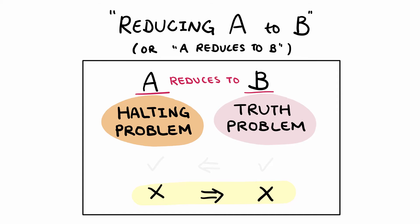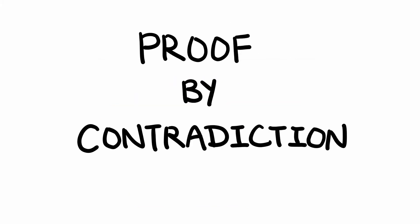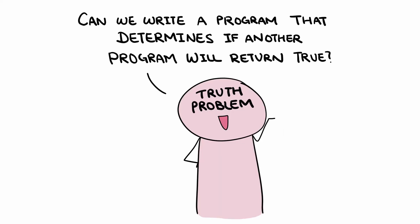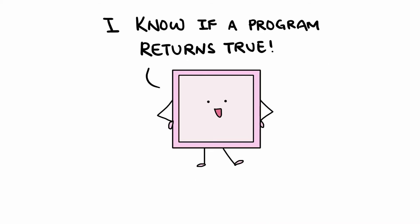To show that a problem is undecidable using reductions, we do it through a proof by contradiction. I've included the proof in writing in the description below as a reference, so feel free to look at that to follow along. The truth problem asks whether we can write a program that determines if another program will return true. Let us now assume for the sake of contradiction that there is a program that decides the truth problem.